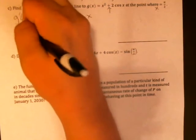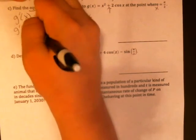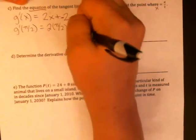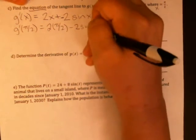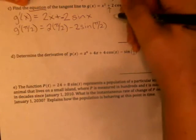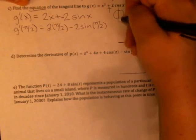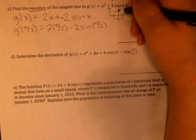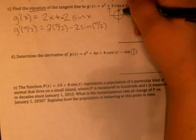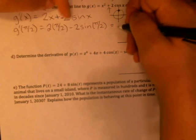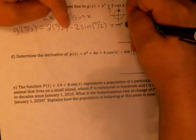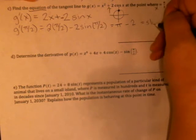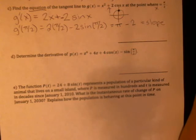And then we want to plug in pi over 2. So we have 2 times pi over 2 minus 2 times the sine of pi over 2. So now we're thinking unit circle, pi over 2 right at the top. Our y value, sine is asking for y, so our y value is 1. Which means we have 2 times pi over 2, pi minus 2 times 1. So this is our slope. Slope equals pi minus 2.